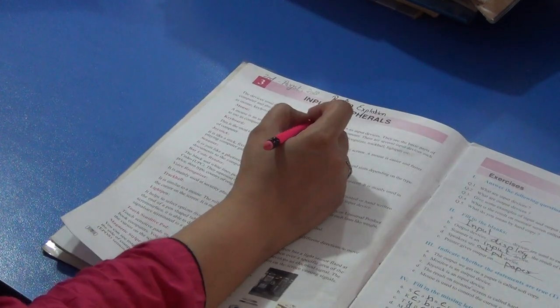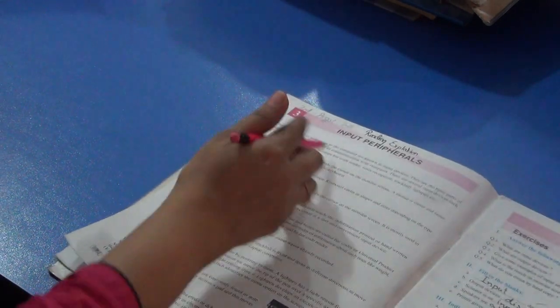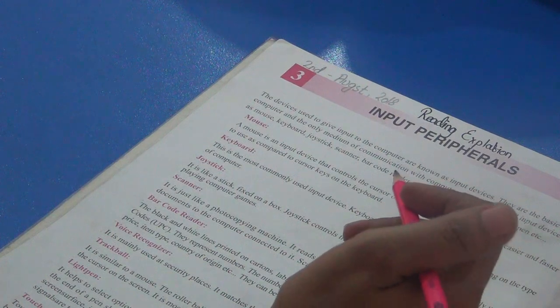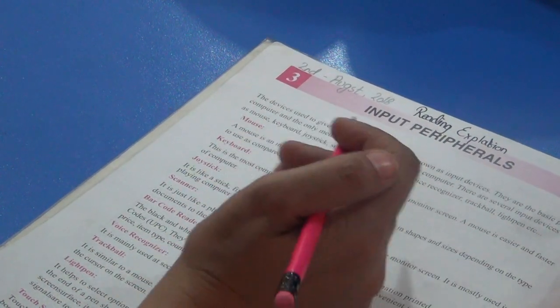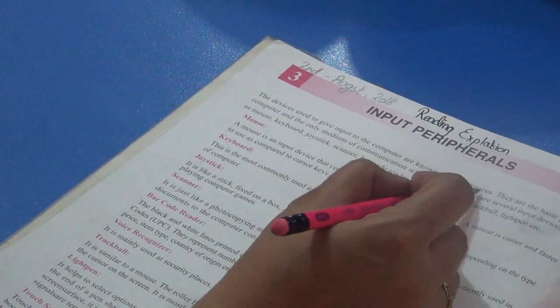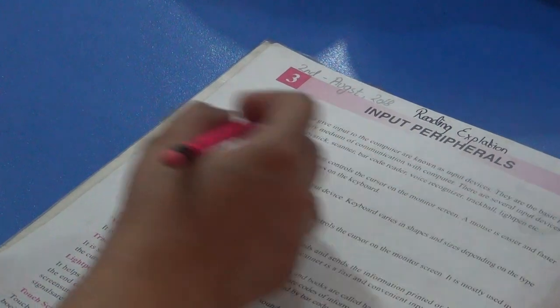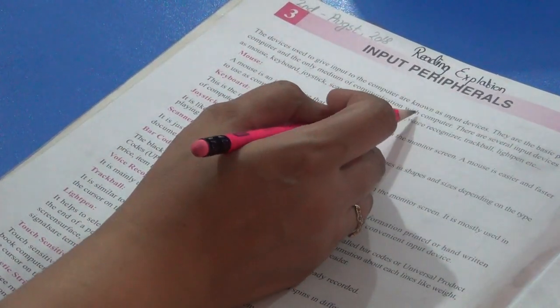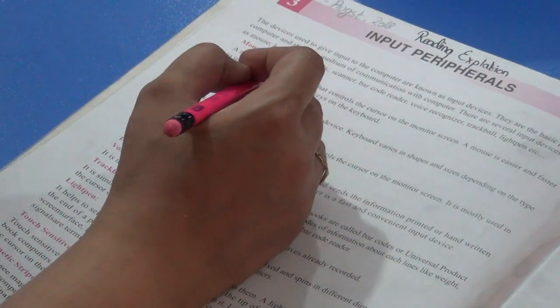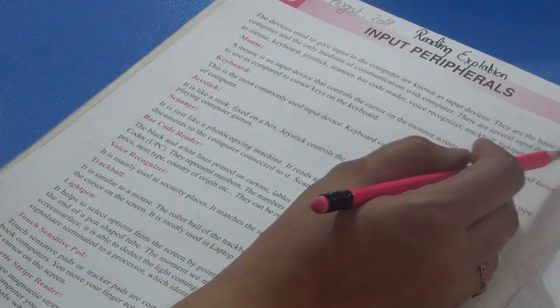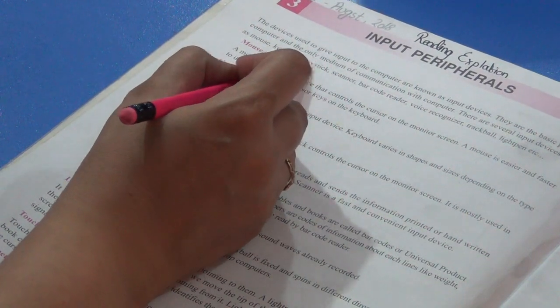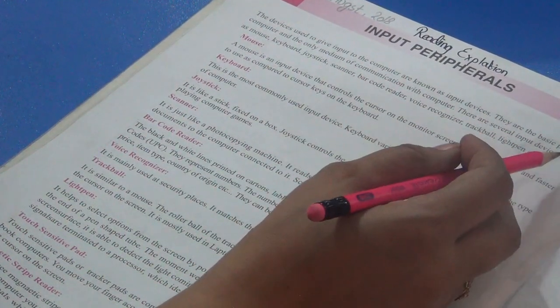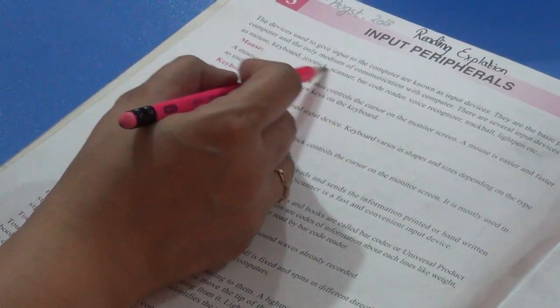Come to page number 7. You have the third chapter, Input Peripherals. The devices used to give input to the computer are known as input devices. Any electronic devices that we use to give any raw material to the computer, these are called input devices. They are the basic parts of computer and the only medium of communication with computer. There are several input devices such as mouse, keyboard, joystick, scanner, barcode reader, voice recognizer, trackball, light pen, etc. We have a lot of input devices for various functions. I am giving you these examples.